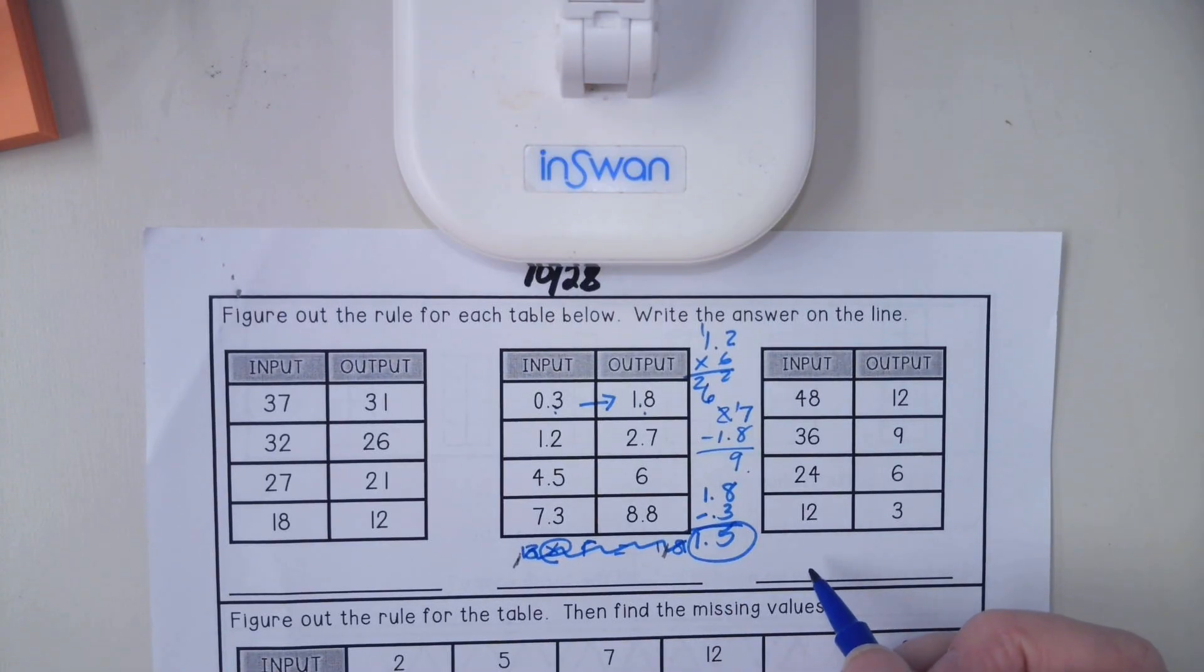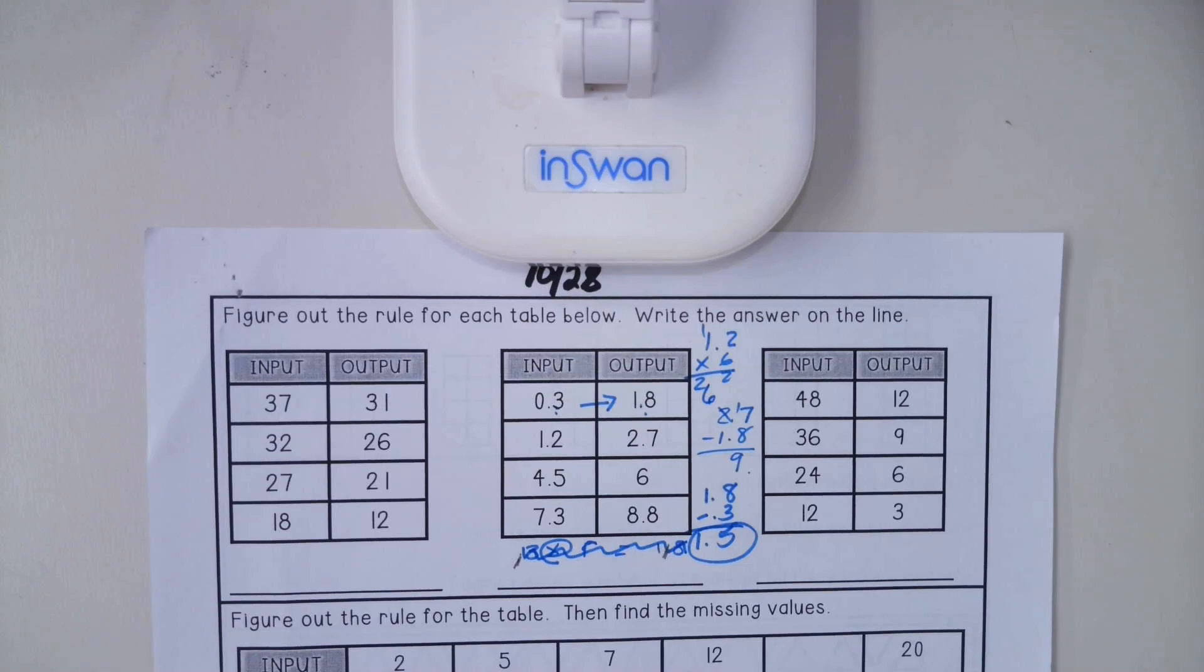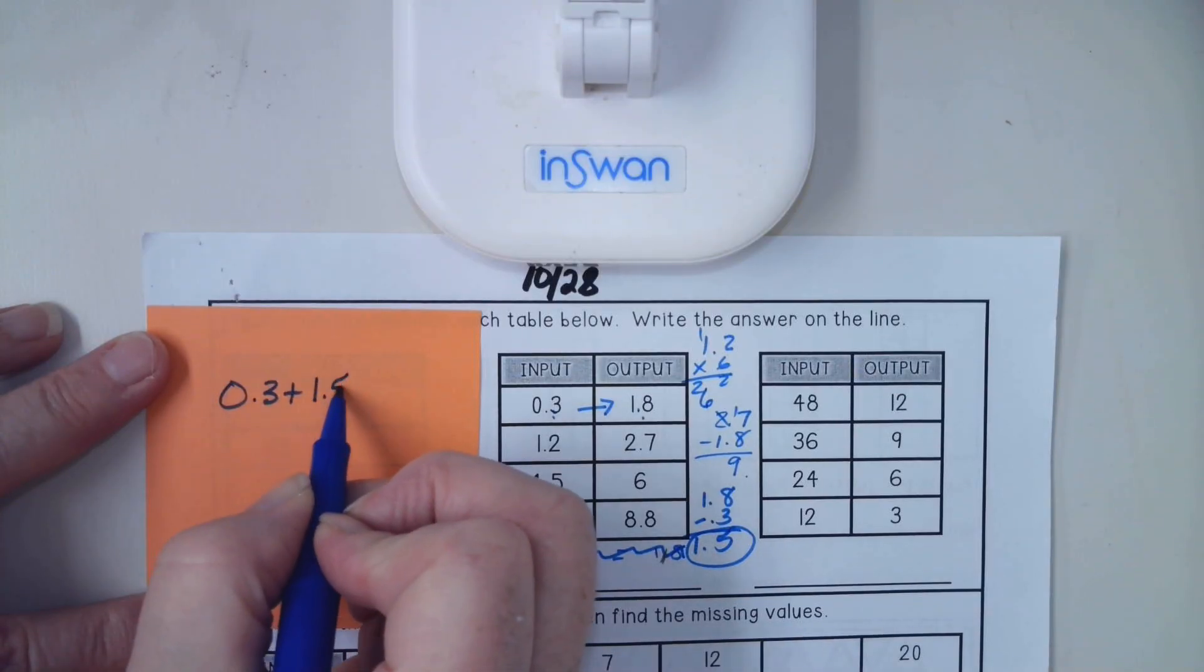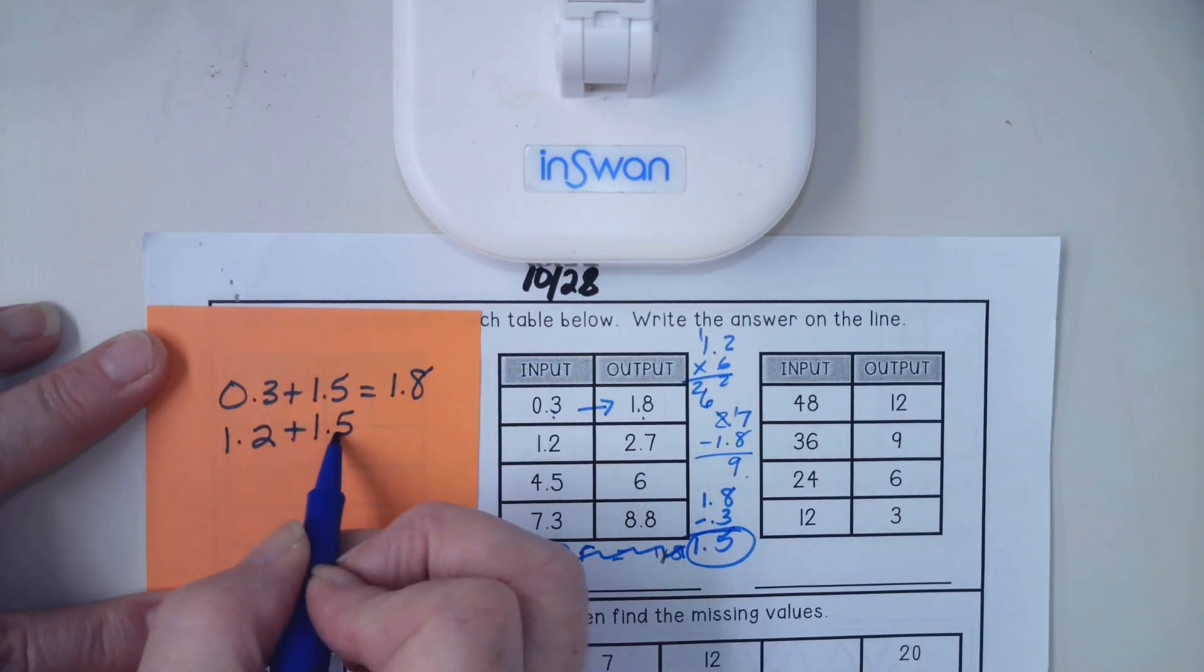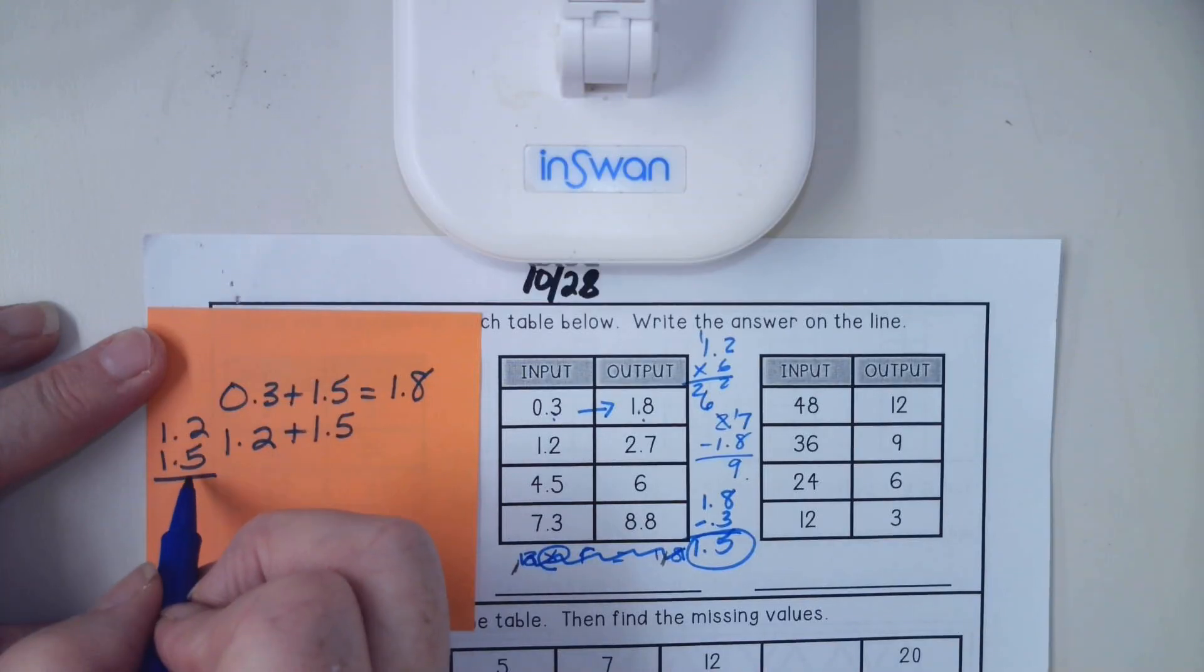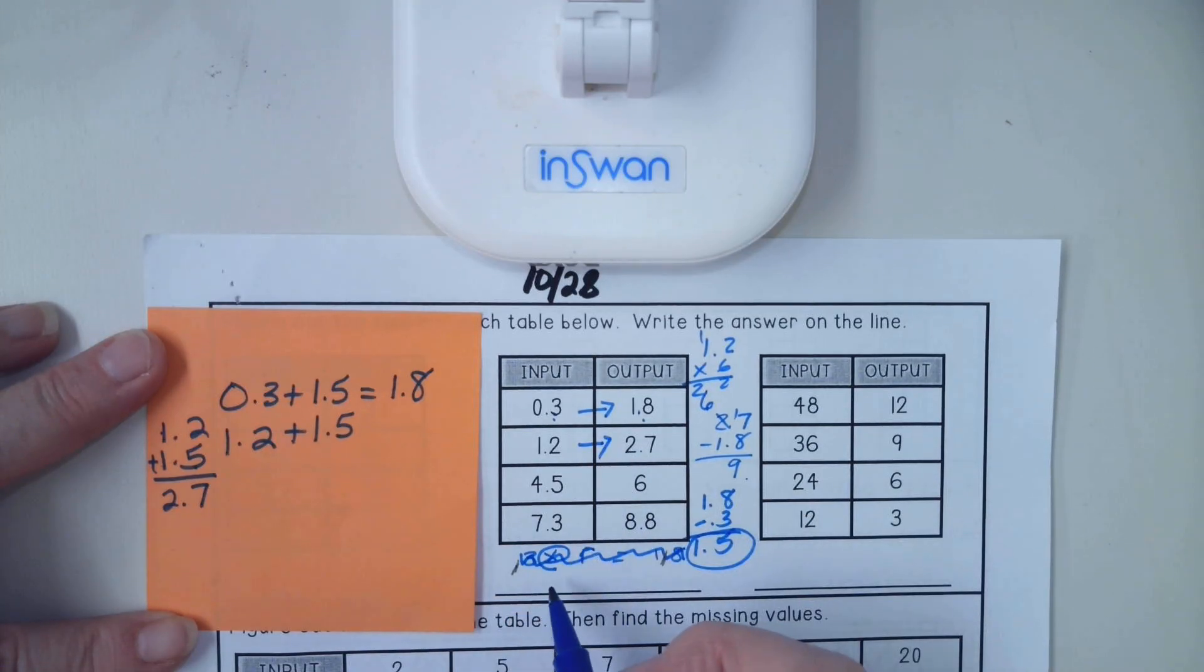So maybe my problem is an addition problem, not a subtraction problem. I'm going to use a scrap piece of paper and see if that is the case. Right now my new estimate is that 0.3 plus 1.5 equals 1.8. Now our next problem is 1.2 plus 1.5. I can just line those up over here, work with them just like their regular numbers. Just make sure the decimal point is lined up. 5 plus 2 is 7 and 1 plus 1 is 2. That checks out. So now I know my rule is plus 1.5 or add 1.5.